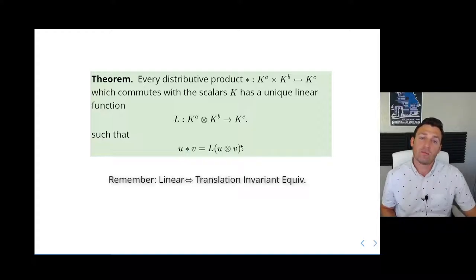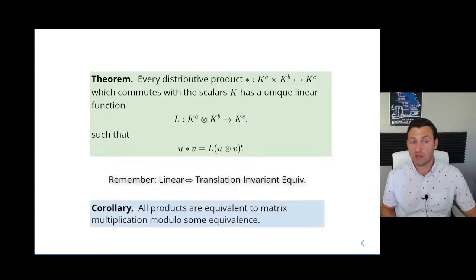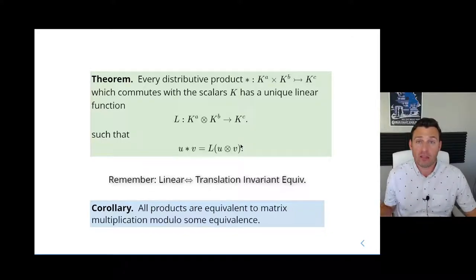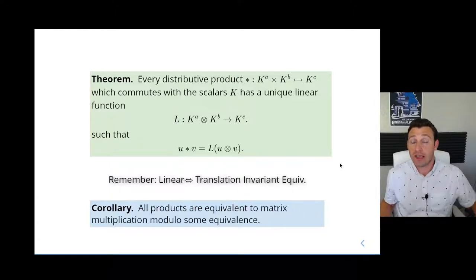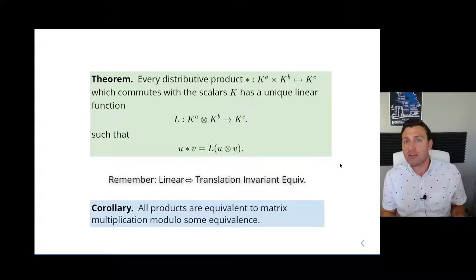Said another way, linear is just code word for translation invariant equivalence. So the corollary of the universal mapping property of tensors is simply saying this: Every distributive product is a matrix product, just subject to some equivalence relation. Now digesting that for a program is an enormously helpful tool. Now that we know that all products can be backed up by matrix multiplication, we can write some really stunning software to do quick matrix multiplication and store it efficiently. In the background, we're capturing every single product. All we need is a fast multiplication of matrices and a fast linear map function.